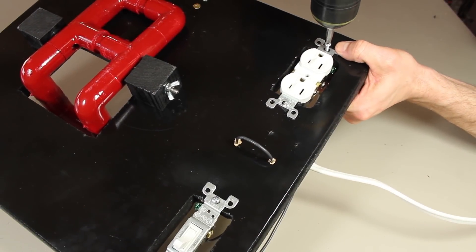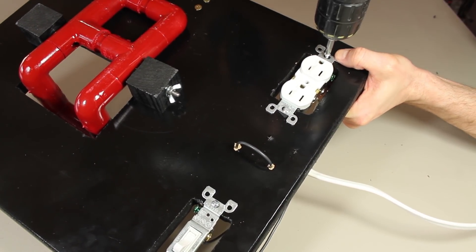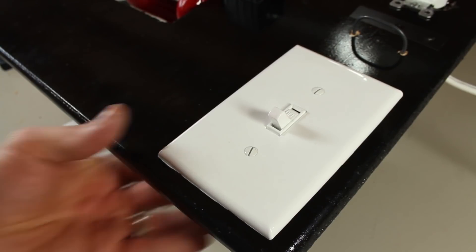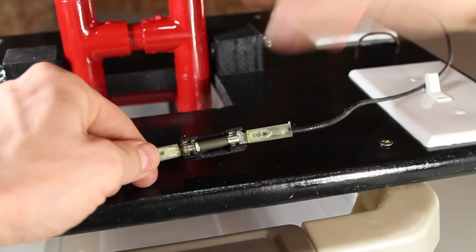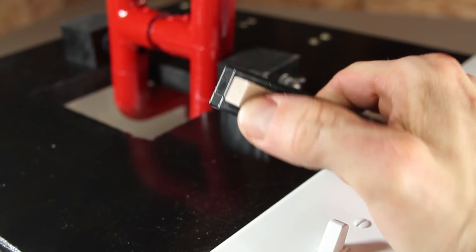At this point, we can fasten the light switch and the outlet onto the control board, and add the faceplates for a finishing touch. This control panel is fully functional, but if you wanted to add a little more safety, you could add a replaceable fuse, or even wire up a circuit breaker.